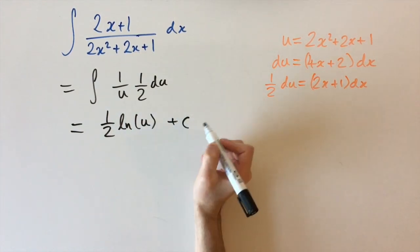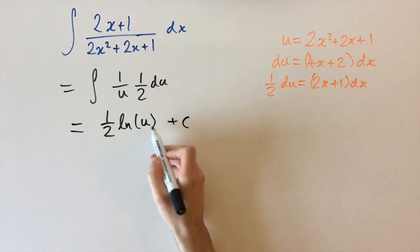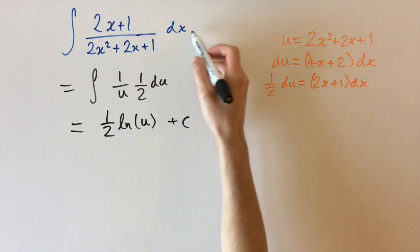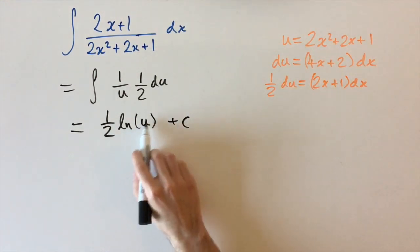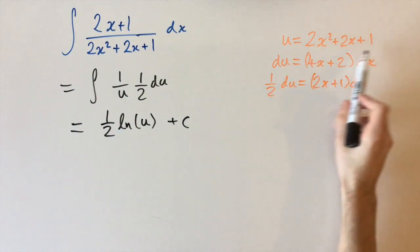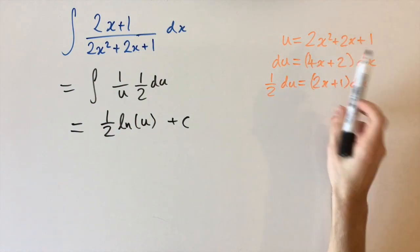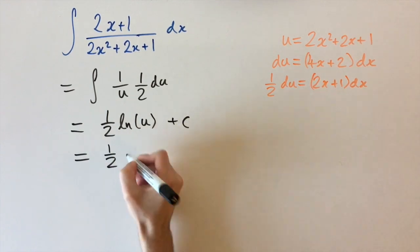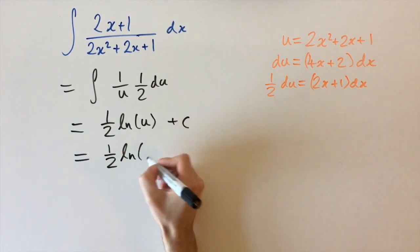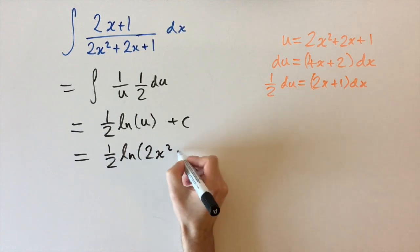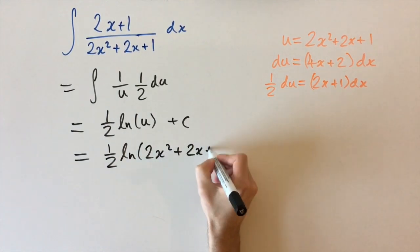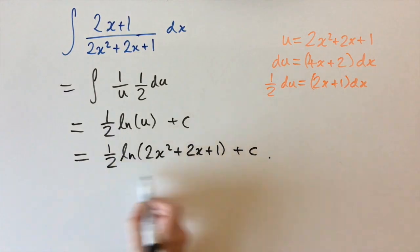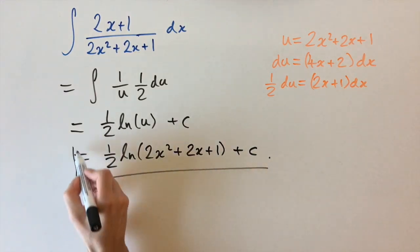And as always, we need to express the answer in terms of the original variable, which is x. So we're just going to go ahead and replace u by how we define this, u equals 2x squared plus 2x plus 1. So this is equal to a half times the logarithm of 2x squared plus 2x plus 1 plus c. So there you go, that's the answer, a very nice and quick integral.